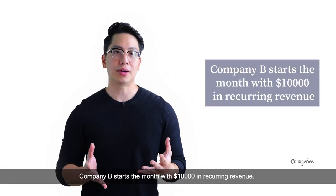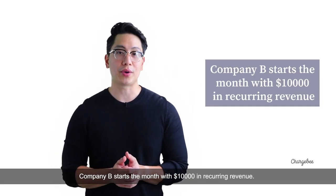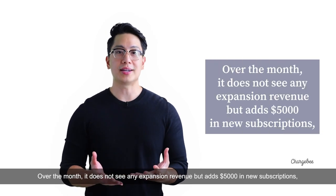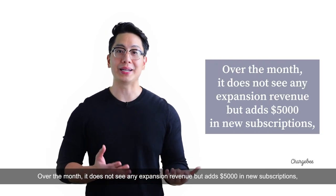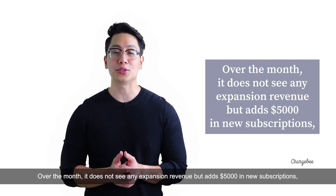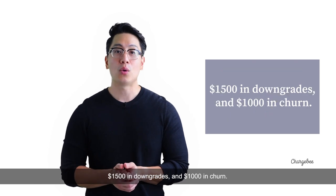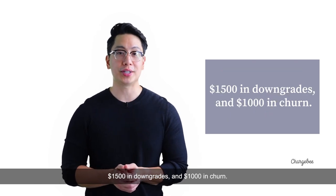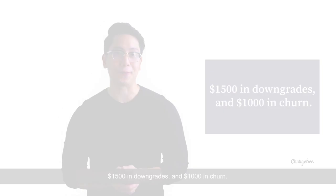Company B starts the month with $10,000 in recurring revenue. Over the month, it does not see any expansion revenue, but adds $5,000 in new subscriptions, $1,500 in downgrades, and $1,000 in churn.